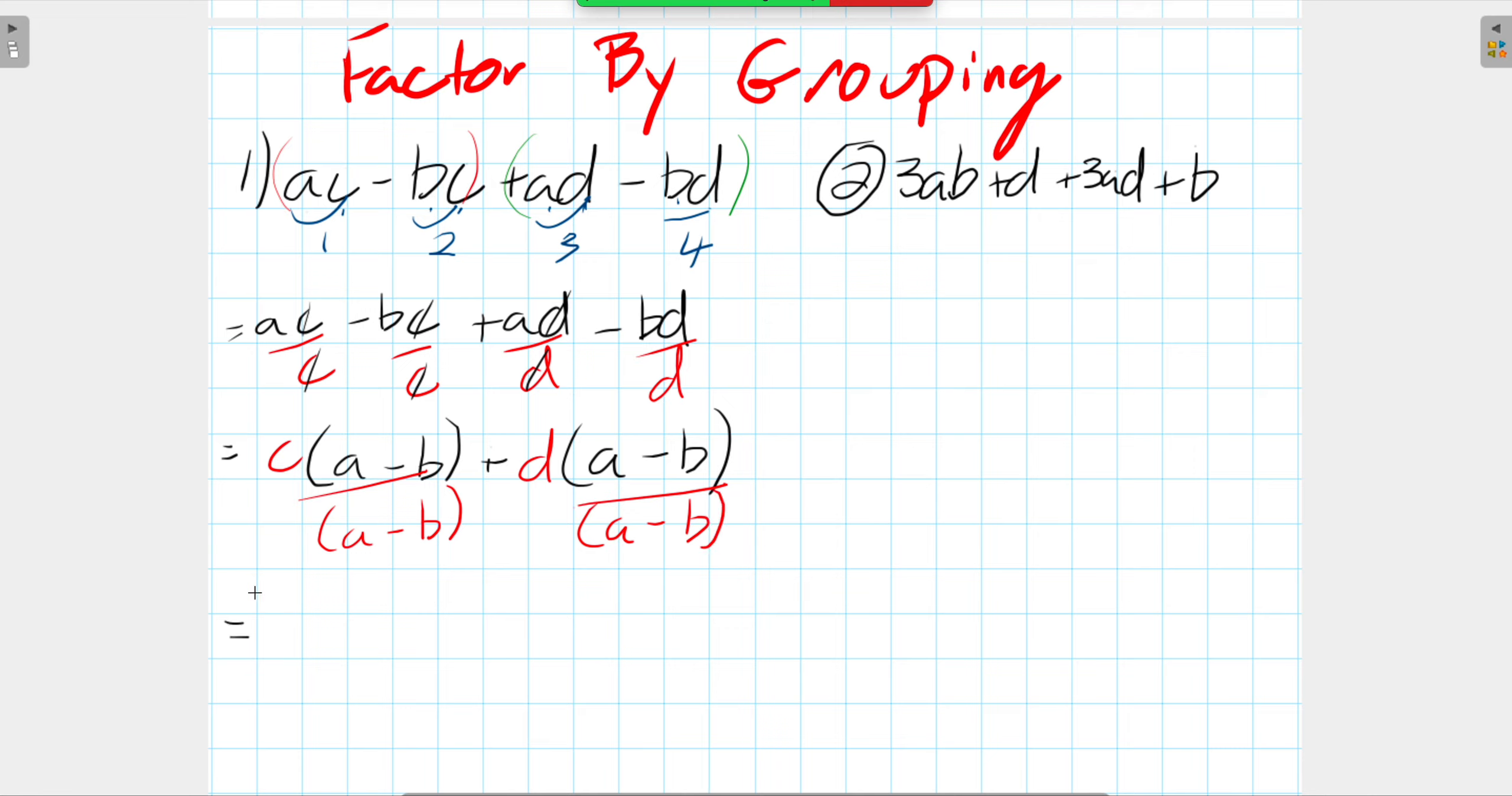So what does that end up becoming? Well, that ends up with A minus B. And what are we left with on the side? We know that these create a 1, so we have C, and these create a 1 plus D.